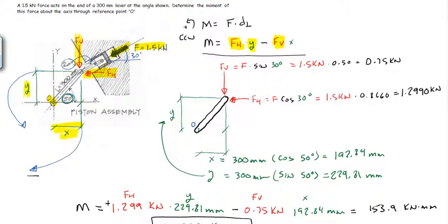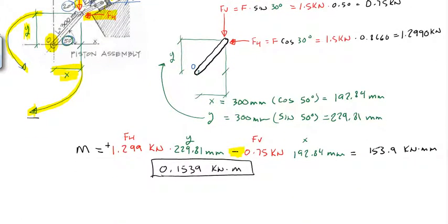And then to make sure you get the signs right, always analyze which way is that force tending to spin the object around your point of concern. So the horizontal force is trying to spin it counterclockwise, therefore it's positive. The vertical force is spinning in a clockwise sense, which is opposite of our sign convention, which is negative. And so you want to make sure that your signs on your solutions work out correctly.